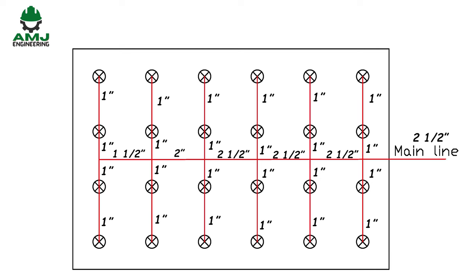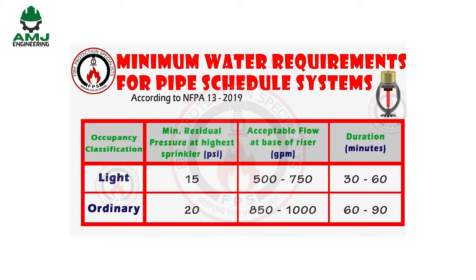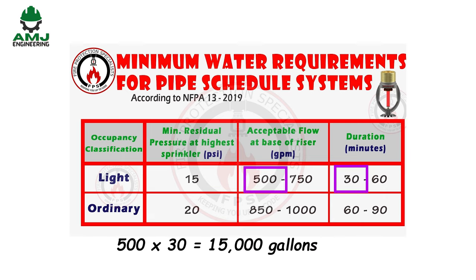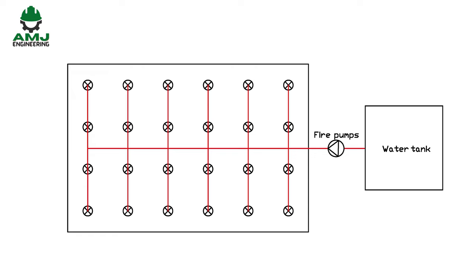What is the minimum water supply requirement for pipe schedule systems? The table below summarizes the minimum water flow rate, residual pressure, and duration of pipe schedule systems. Therefore, 500 GPM multiplied by 30 minutes means a minimum of 15,000 gallons water tank shall be constructed.